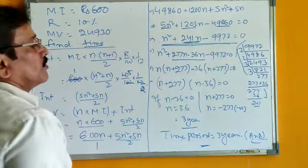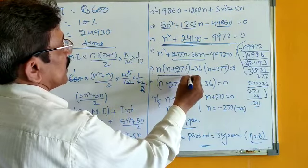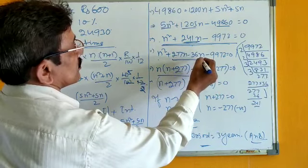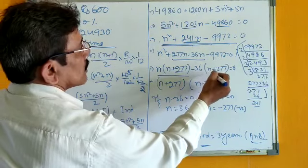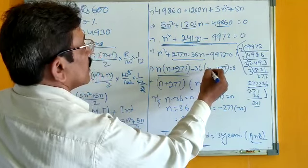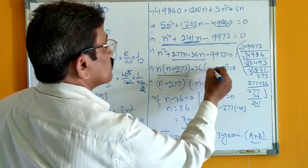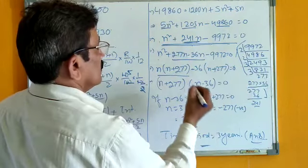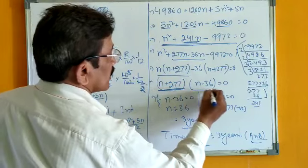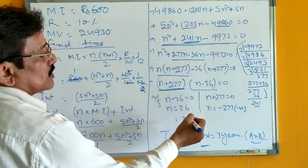Now, just factorize. First, N is common, so that N bracket N plus 277, minus 36 is common from last term, that is 36 into N plus 277 equals 0. So, N plus 277 is one factor, and N minus 36 is another factor. Each factor equal to 0.